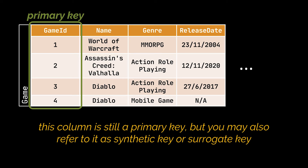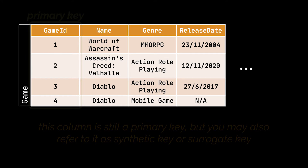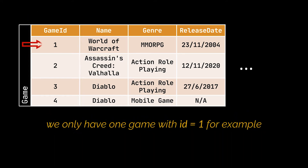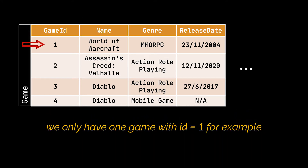It is still a primary key, but you may also refer to it as a synthetic key or surrogate key. These connotations suggest that it is a system-generated value whose only reason is to be the primary key. So now, if we want to retrieve a particular row, this primary key will point us to the one specific and unique row.